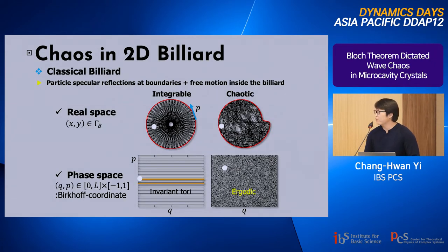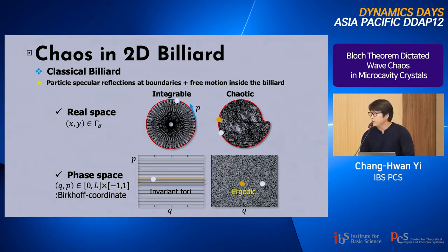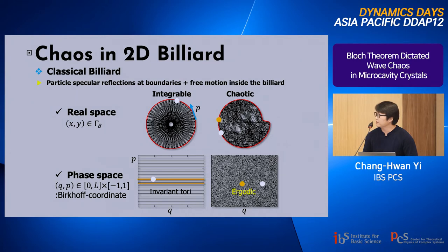The basic framework of the micro-disc is the 2D billiard. In billiard study, if the particle dynamics inside the billiard is integrable, the trajectory of particle motion is regular and the corresponding phase space is filled by invariant tori. On the other hand, if the particle motion is chaotic, the trajectory is very complicated and the phase space exhibits ergodic properties. This phase space is described by the Poincaré coordinate.